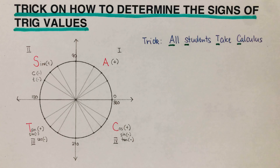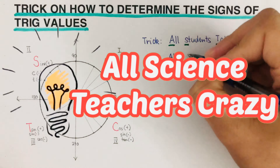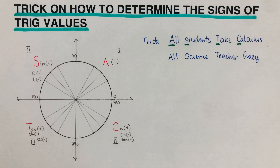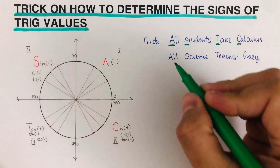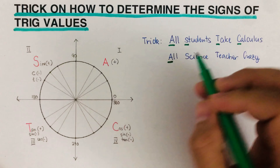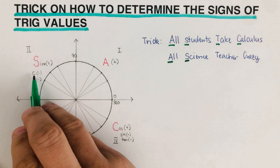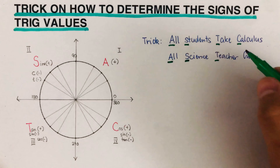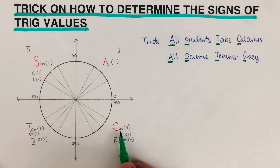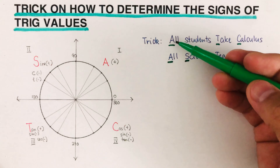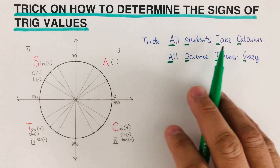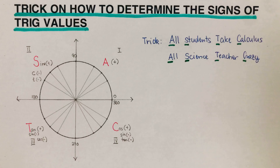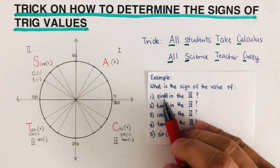There is another mnemonic we can use: All Signs Teachers Crazy. On the first quadrant, all are positive. On the second quadrant, only the sine is positive. T for Teachers means only the tangent is positive in the third quadrant. C for Crazy means only the cosine is positive in the fourth quadrant. You can use either statement — All Students Take Calculus or All Signs Teachers Crazy.